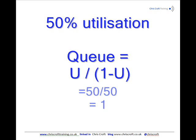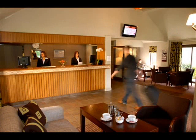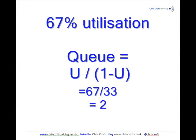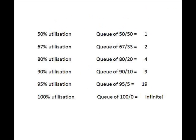You'll need twice as many people on the reception desk or answering the phone. And that's why expensive hotels cost twice as much — you pay double in order to be served immediately. If your utilization goes up to 67%, the queue length is 2. Once it reaches 80%, the queue length is 4. When you get to 90% utilization, which some people would think is quite an efficient organization, the queue length is going to be 90 over 10, which is 9 people waiting on average. When you get to 95%, it becomes 95 over 5, which is 19 people in the queue.